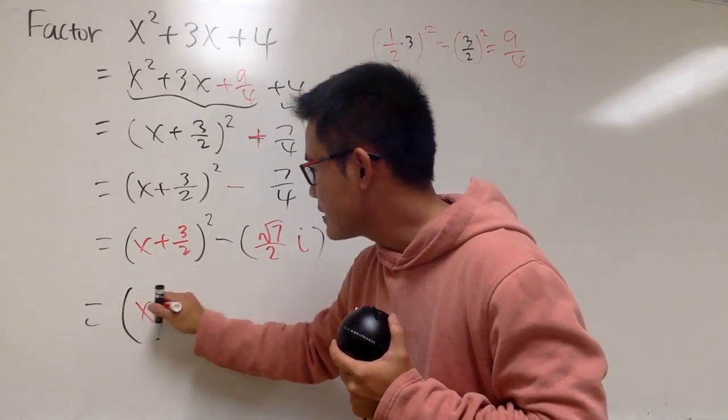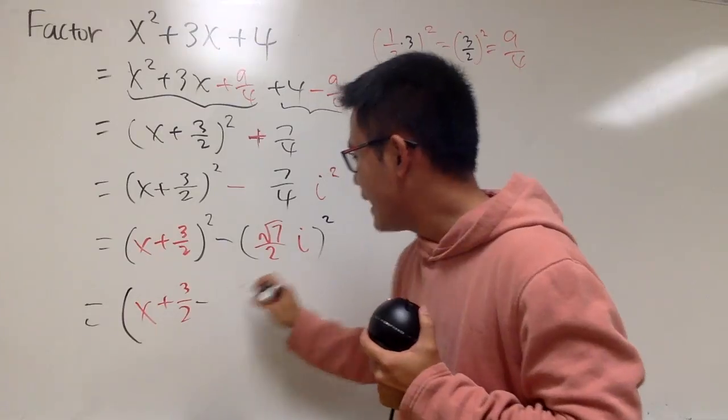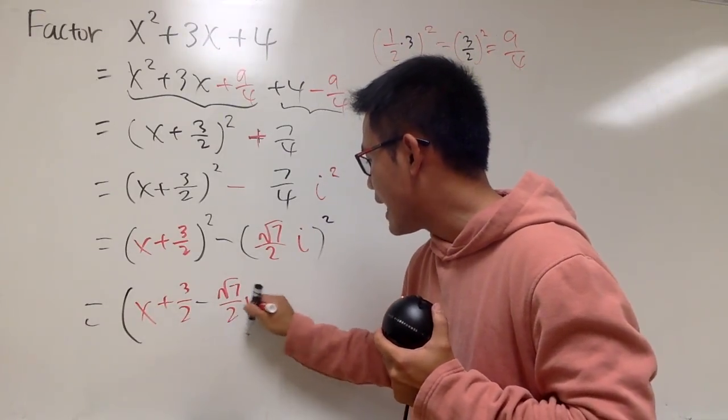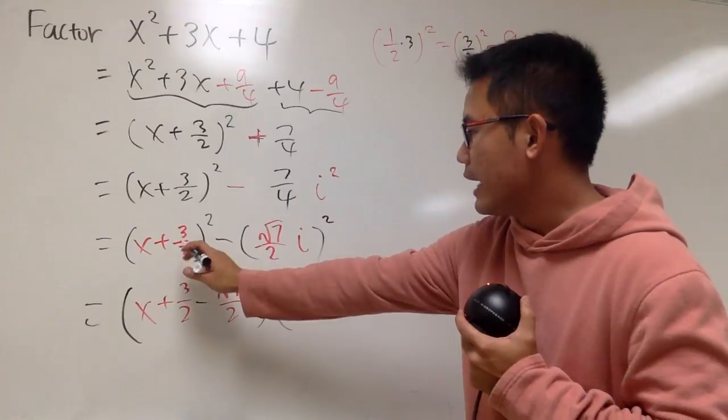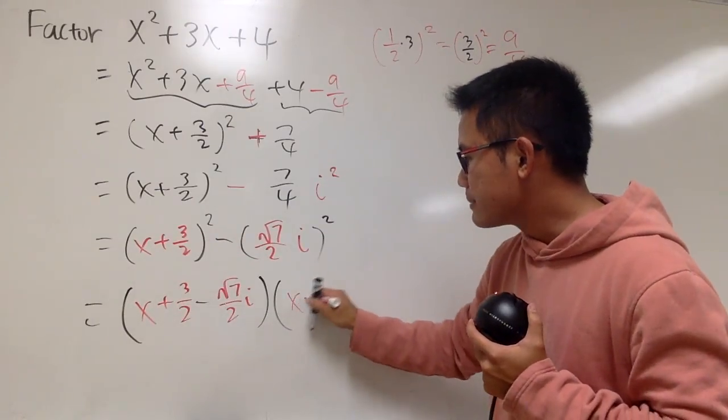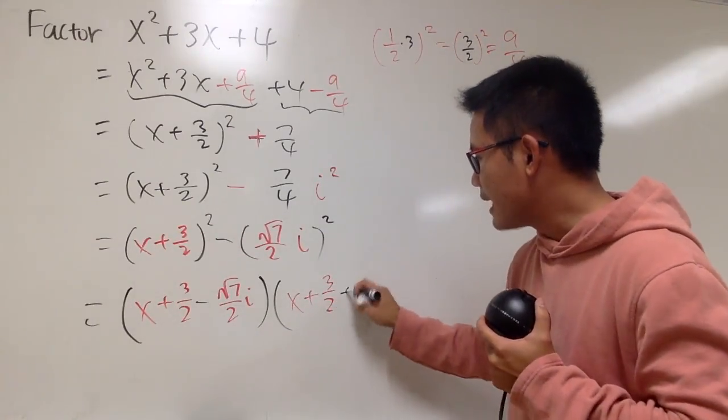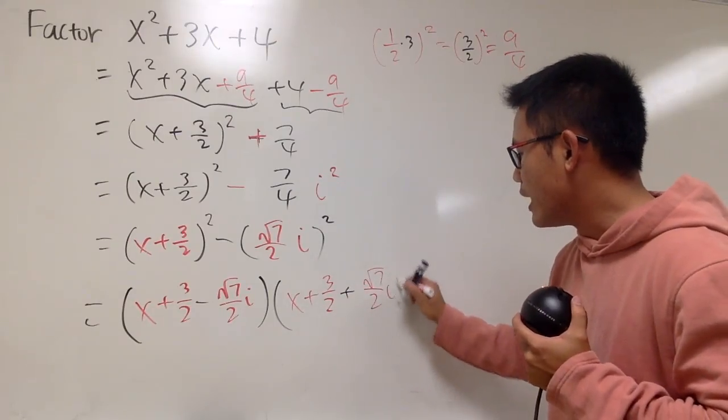The first term is going to be x plus 3 over 2, minus this guy, which is square root of 7 over 2 i. And then, multiply with a plus b, which is this guy, x plus 3 over 2, plus this guy, which is square root of 7 over 2 i.